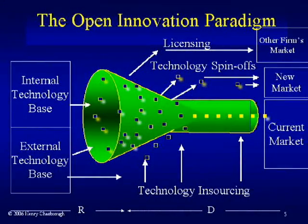Instead, what we need is an open model. In the open innovation model we still have an R&D funnel turned on its side, but there are many more pathways into the model for ideas to come in, not only from inside but also from the outside. And when those ideas are taken to market, some of them go through the company's own processes, but others go through other processes — think of licenses, spinoffs, or joint ventures — to get to the market. So in the open innovation model, it's much more open coming in and much more open coming out.